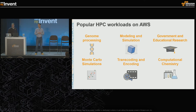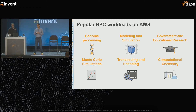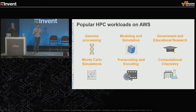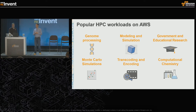So what are some popular HPC workloads on AWS? In the media and entertainment space, there are transcoding and encoding workloads. We see genomics becoming a more popular workload. In the financial services space, Monte Carlo simulations are becoming quite popular. And in the manufacturing space, modeling and simulation are increasingly present as HPC applications running in the cloud.